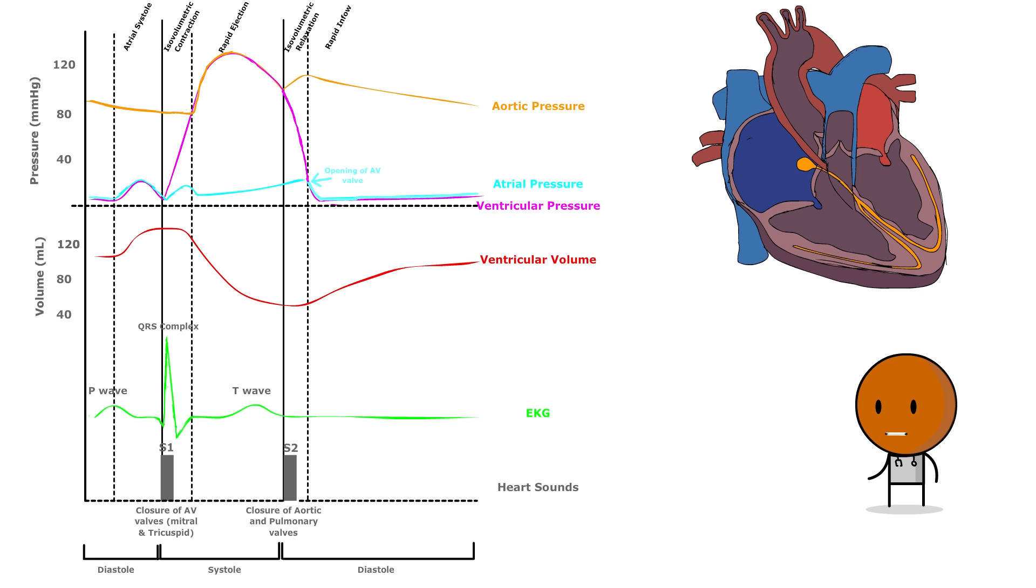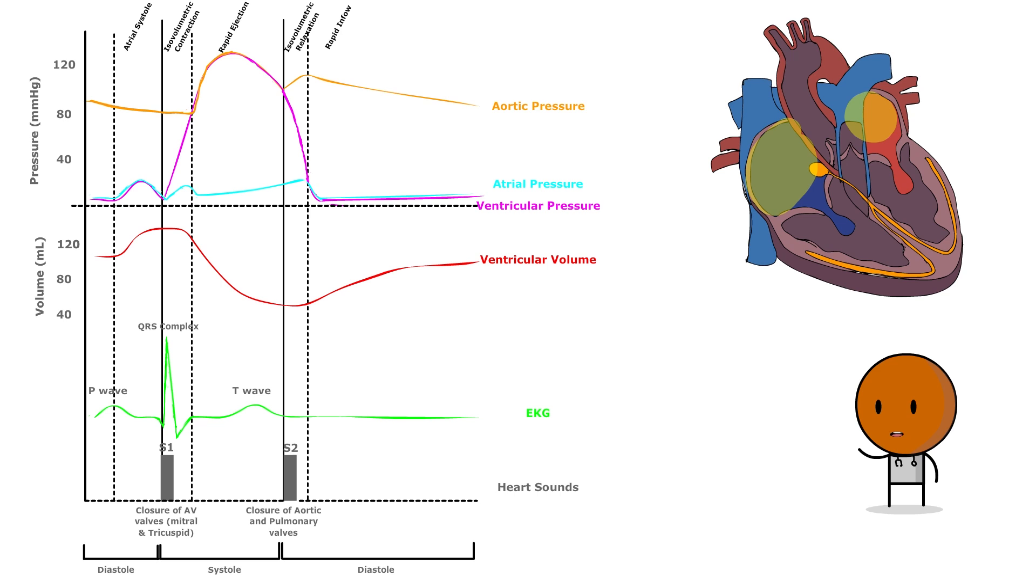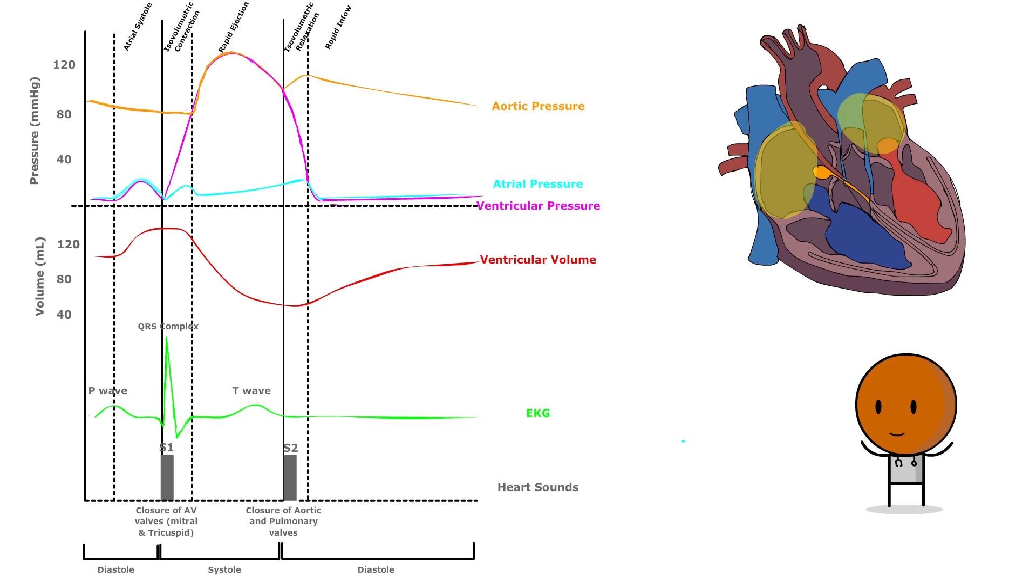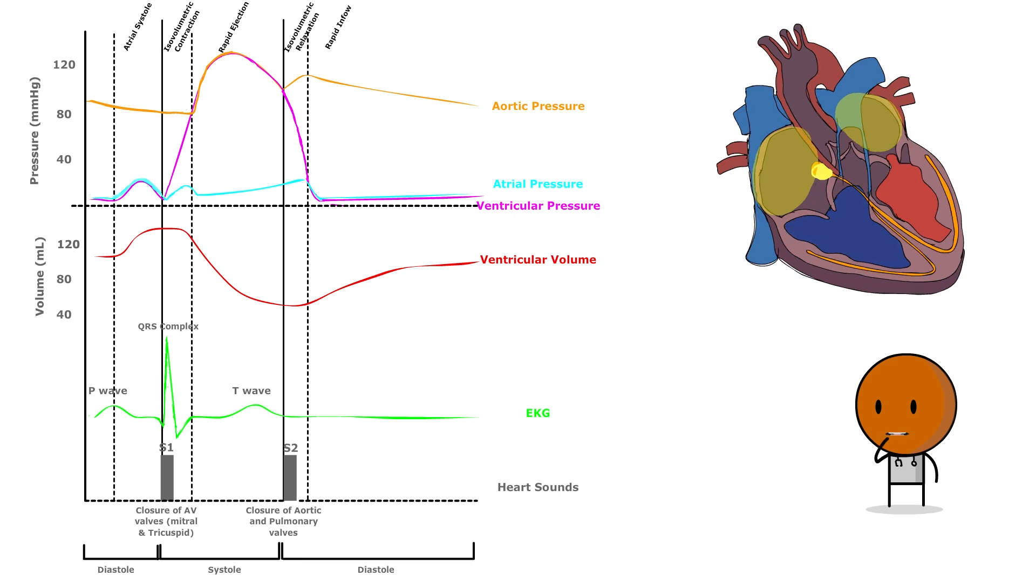Moving on to the second phase is atrial systole. Near the end of the ventricular filling, the atria contract, giving an additional push to fill the ventricles. This contraction causes a slight, brief spike in atrial pressure, known as the A-wave.